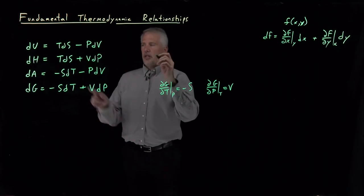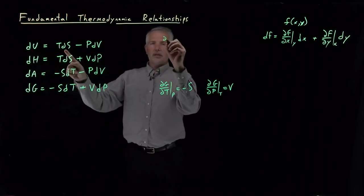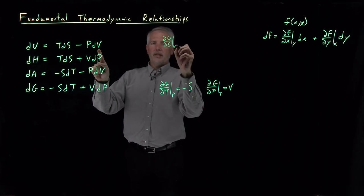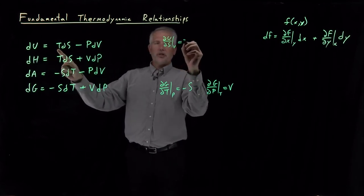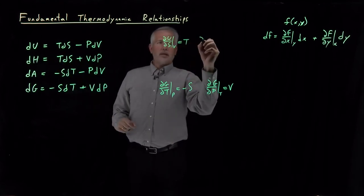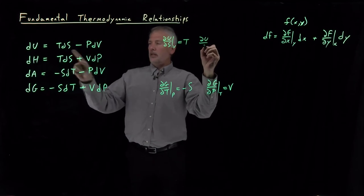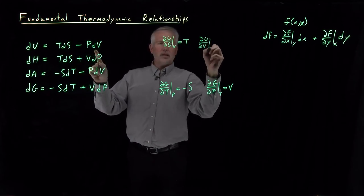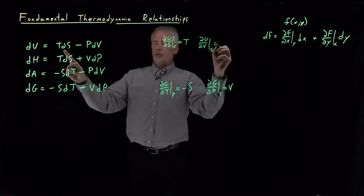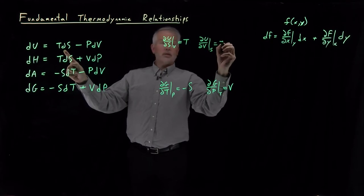For the internal energy, dU/dS at constant V is equal to this coefficient T. dU/dV at constant S is equal to negative pressure.